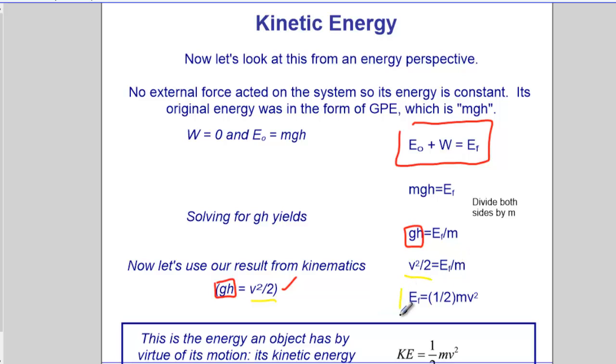And if we solve for that final energy, that new energy we're defining as being kinetic energy, KE, is one-half Mv squared. This is the energy an object has by virtue of its motion, its kinetic energy. So kinetic energy is one-half Mv squared.